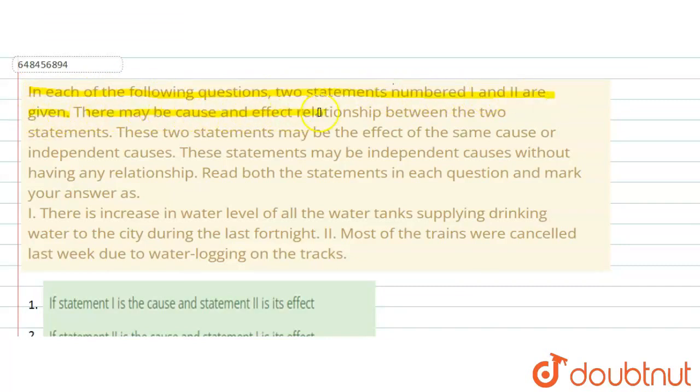There may be cause and effect relationship between the two statements. These two statements may be the effect of the same cause or independent causes. These statements may be independent causes without having any relationship. Read both the statements in each question and mark your answer.